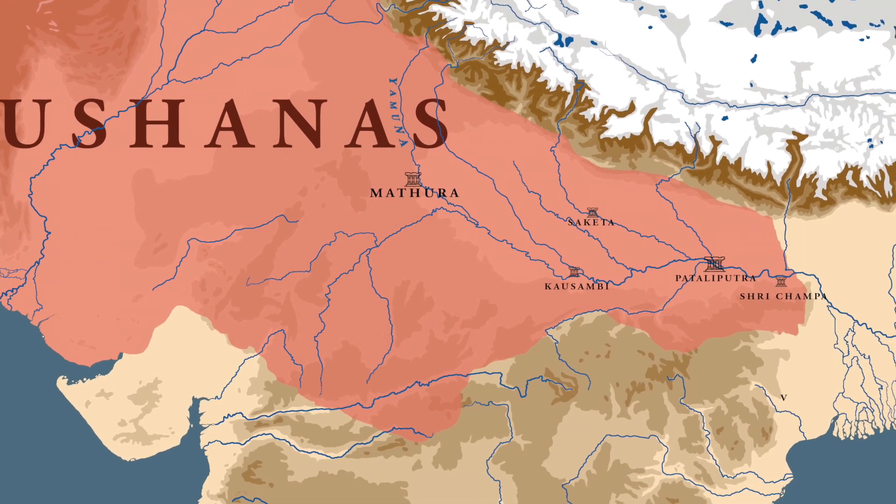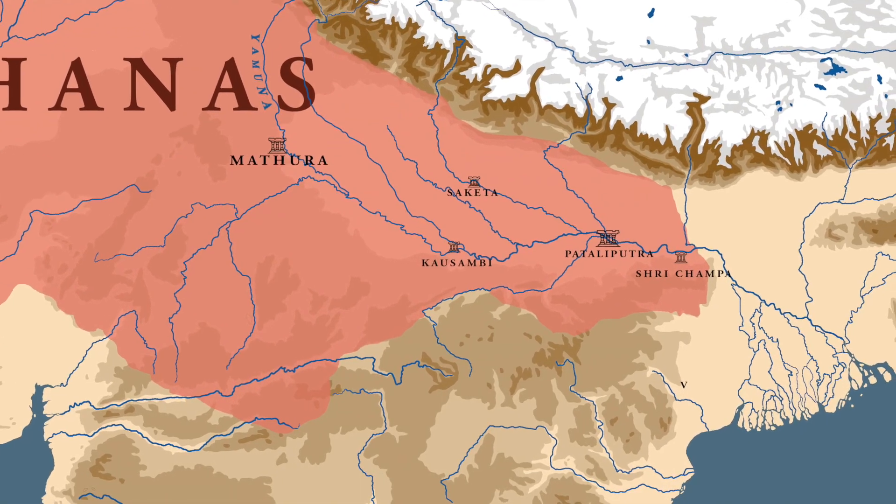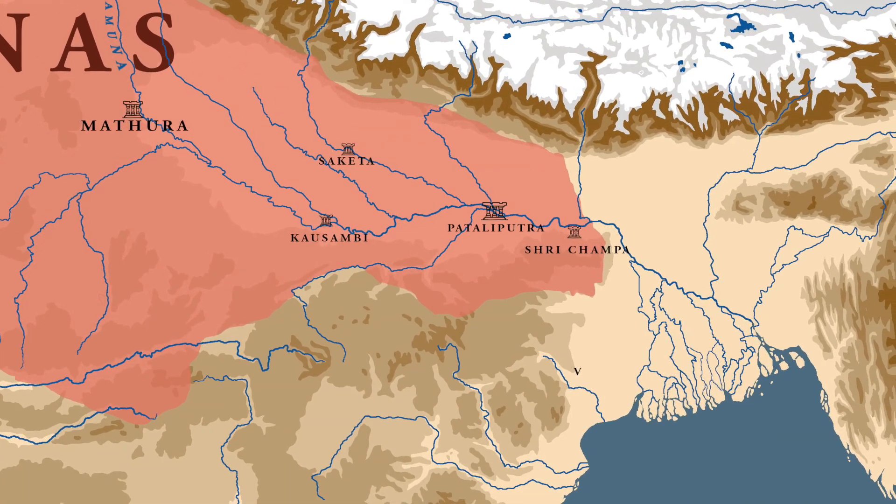To determine how far east of Varanasi Kushana control extended, we look at the Rabatak inscription, which claims that the city of Patliputra and Sri Champa — situated in the eastern part of Bihar — were under Kushana control. Apart from the Rabatak inscription, there is also a story from a Chinese source, which was itself a translation of a Buddhist text.